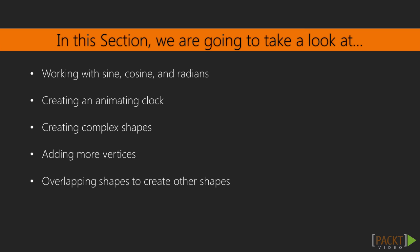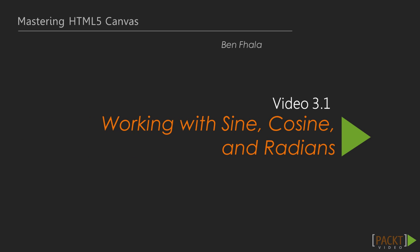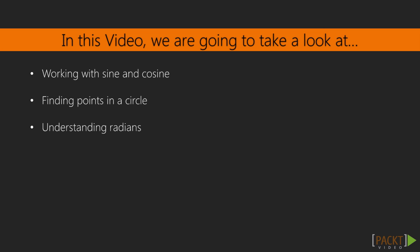We're also going to learn how to overlap shapes with other shapes to create more complex shapes. In the first lesson we're going to work with getting to know sine, cosine, and radians — we'll find specific points in the circle using radians, and understand what radians are and why we work with radians instead of traditional angles from zero to 360.